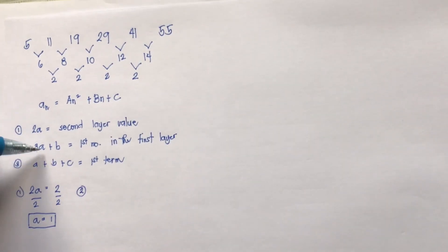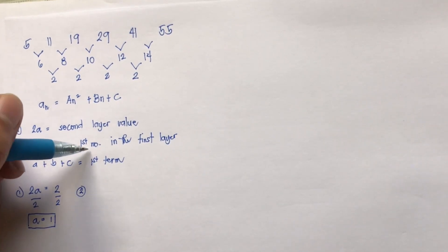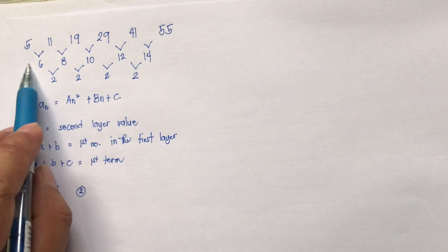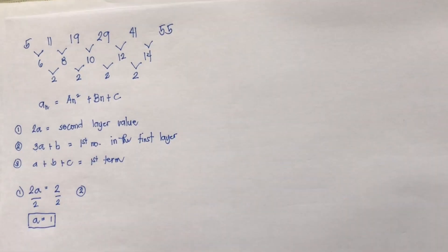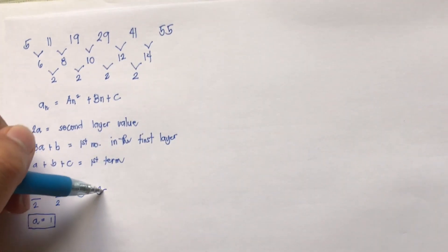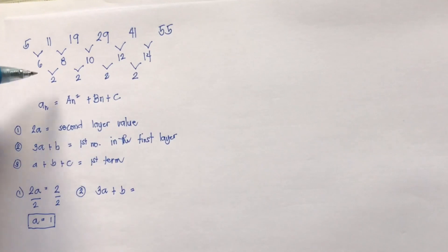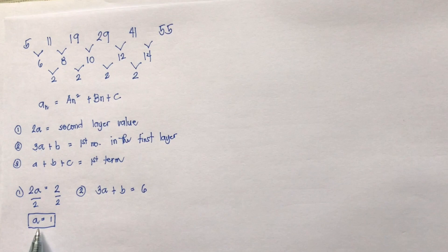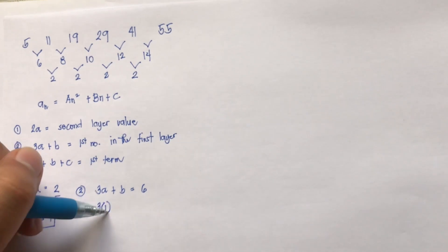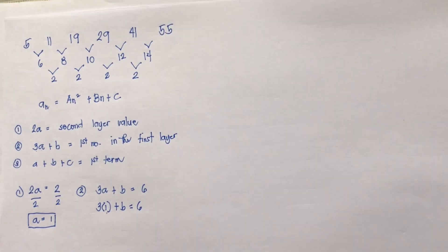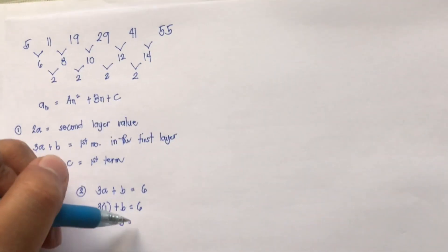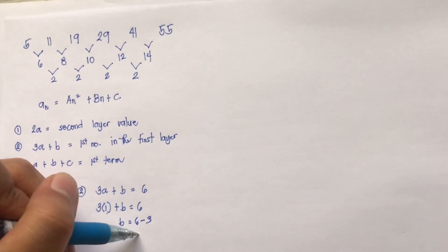The second equation: 3a plus b equals the first number in the first layer, which is 6. Substituting a = 1: 3 times 1 plus b equals 6, so 3 plus b equals 6. Transposing gives b = 6 minus 3, so b = 3.